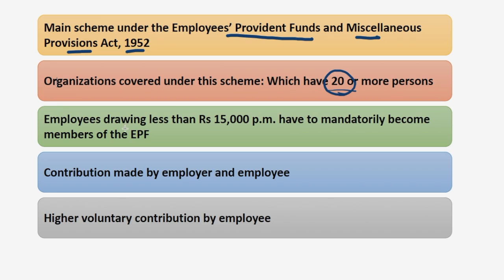Under the EPF scheme, an employee has to pay a certain contribution towards the scheme and an equal contribution is made by the employer. When you work in an organization, your employer also pays towards your EPF and you pay the same amount as your employer. We will also discuss the difference between EPF and PPF.